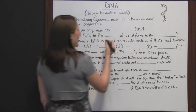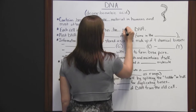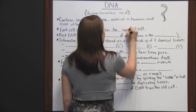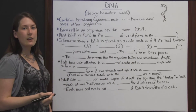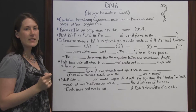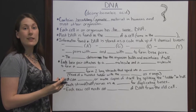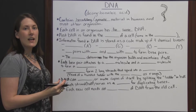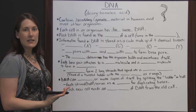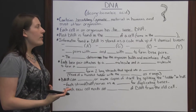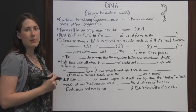Each cell in an organism has the same DNA. If someone were to get a piece of your hair, a fingernail, and a piece of skin and look at the DNA very closely, the DNA in all three would be the same, letting whoever was looking know that all three articles came from the same person.